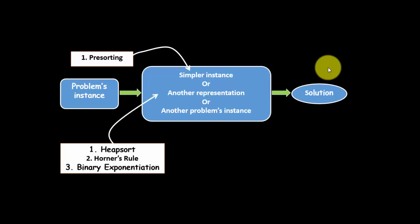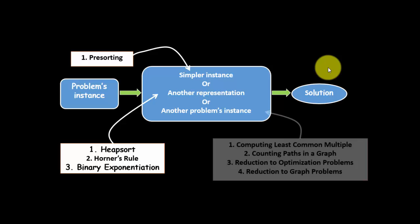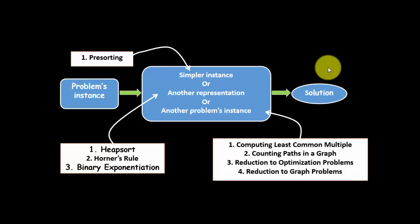Change your input into another representation. We can look at the Heapsort algorithm, Horner's rule, and binary exponentiation. And the third one, to change it into another problem instances, for example, in computing least common multiple, counting path in the graph, reduction to optimization problem, and reduction to graph problem.